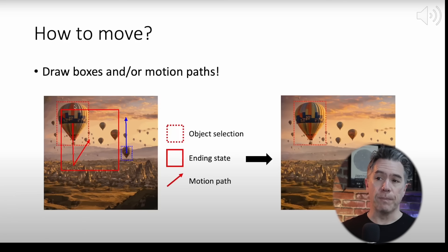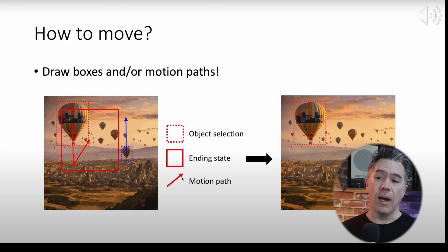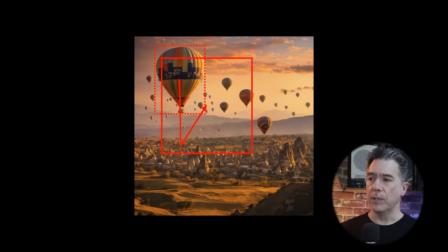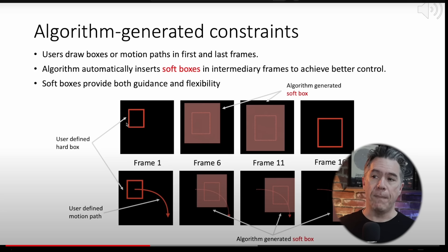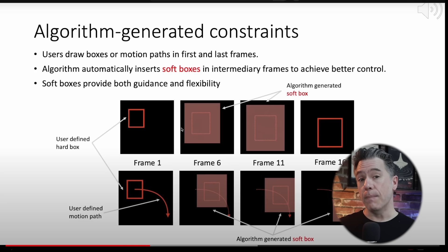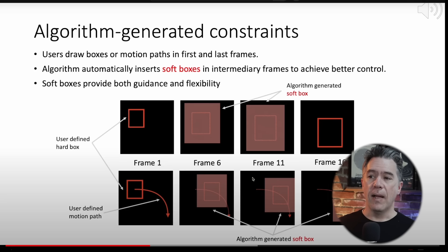Boximator solves this issue with, well, boxes. The way it works is you begin by drawing an object selection box around the thing you want to move, and then another box which represents the ending state of where you want the object to end up. You also have an arrow to create a motion path. When you draw a box, Boximator is actually creating a soft box around that — an area telling the model you only really have to pay attention to this area. Because we've set an end box as well, the soft box can travel along with your subject, so you generally end up with more temporal coherency.